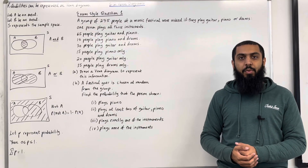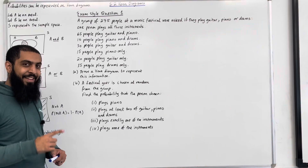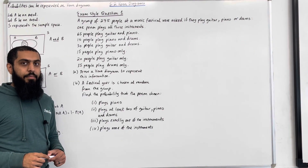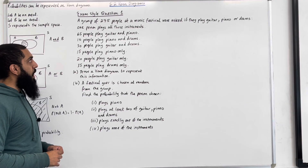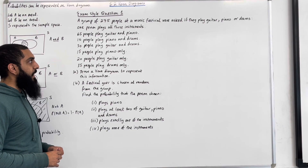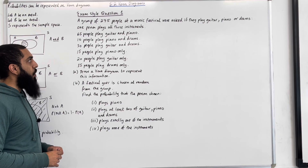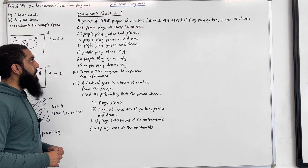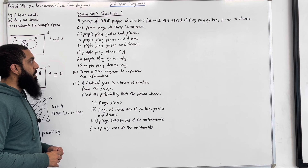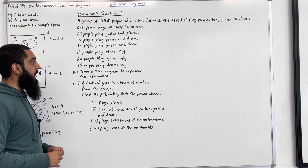I'll be implementing these key facts within two exam style questions. Here is exam style question 1. A group of 275 people at a music festival were asked if they played guitar, piano or drums. One person plays all three instruments. 65 people play guitar and piano. 10 people play piano and drums. 30 people play guitar and drums. 15 people play piano only. 20 people play guitar only. And 35 people play drums only.